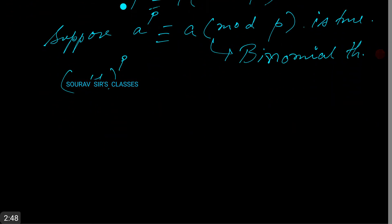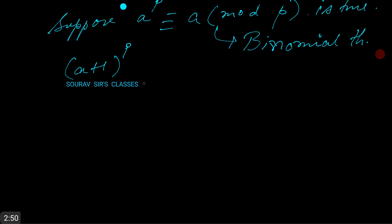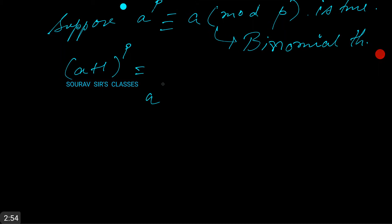I suppose all of you have your binomial stuff clear because this is going to get a little tricky. a to the power p plus p choose 1 times a to the power p minus 1, plus p choose 2 times a to the power p minus 2, plus continuing, we have p choose p minus 1 times a, and 1.